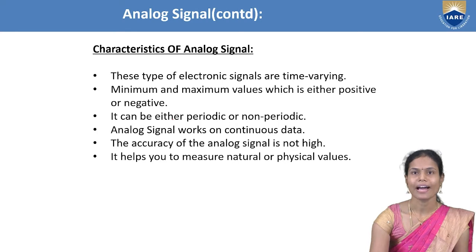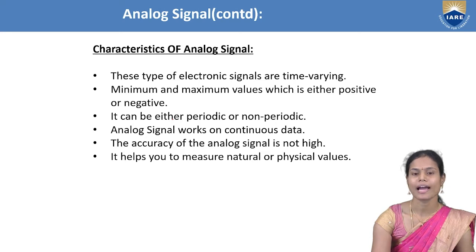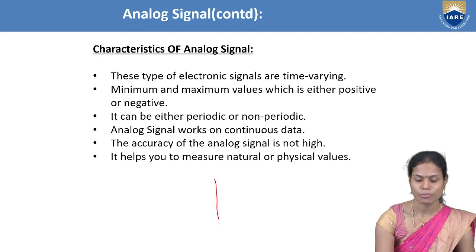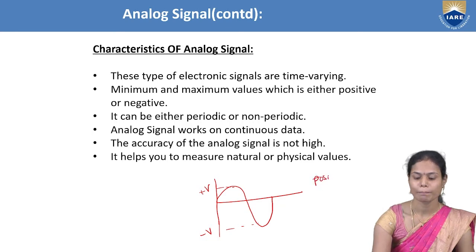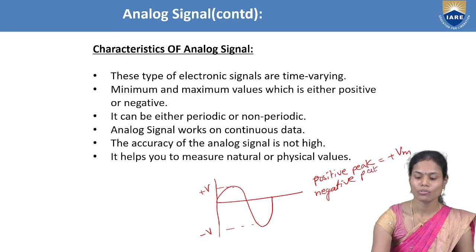Phase angle represents the position of the signal — at what position the signal is varying with respect to time. The major characteristics of analog signal: these are time-varying signals where the amplitude is varying with respect to time, and the minimum and maximum values may be positive or negative. The positive peak or positive amplitude is indicated as +Vm, and the negative peak or negative amplitude is indicated as -Vm.